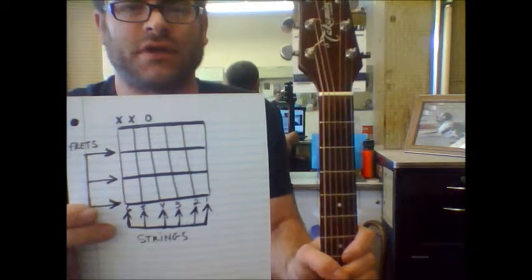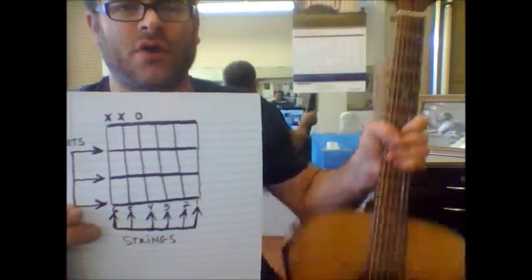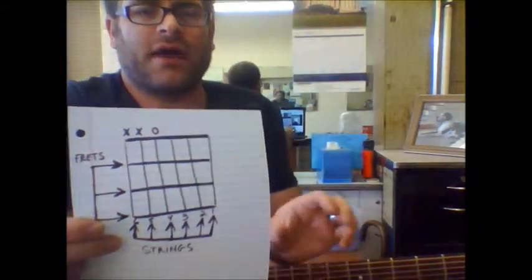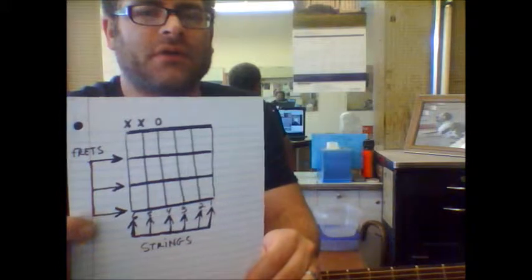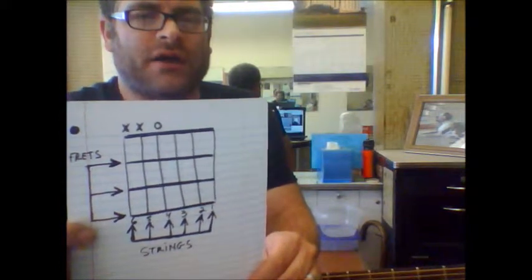So you're looking at it in terms of how the guitar is set up. The top part, X and O. If you've ever seen X or an O, O meaning open, the X are the strings that you're not going to play.